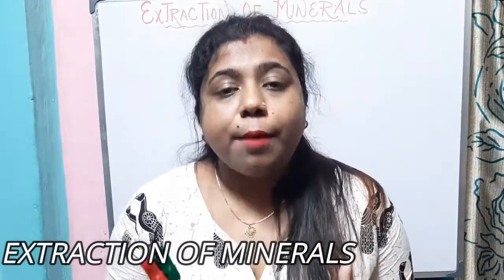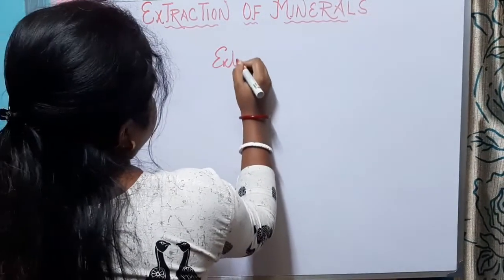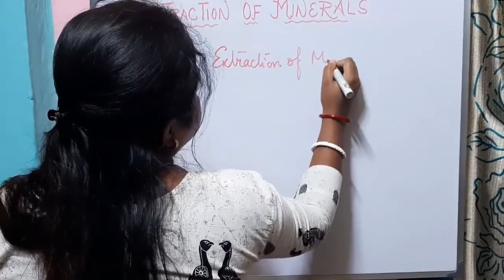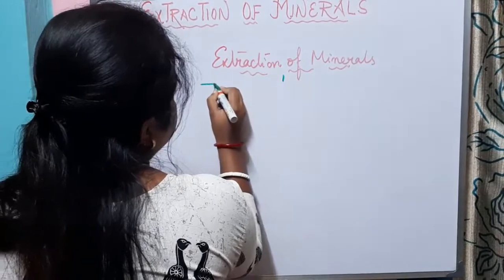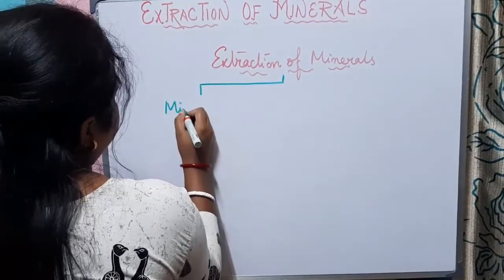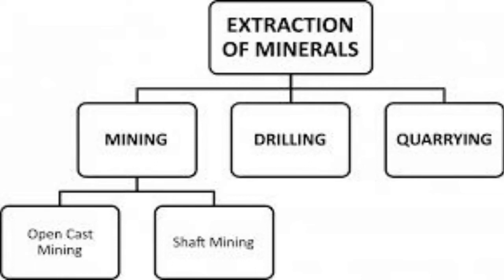Today we will know about the different processes by which we can extract minerals from the earth's surface. There are mainly three processes: number one, mining; number two, drilling; and number three, quarrying. Mining is further subdivided into two types: open cast mining and shaft mining.